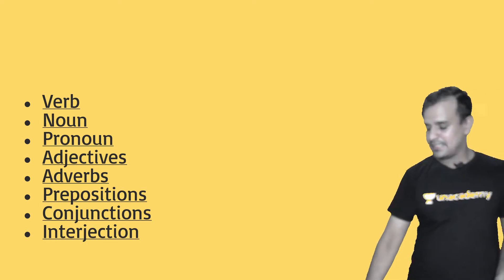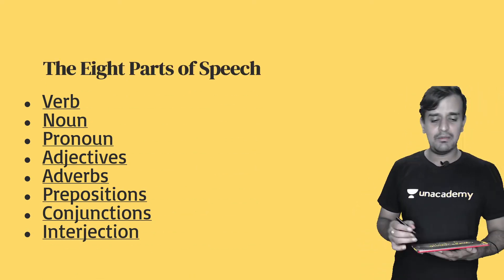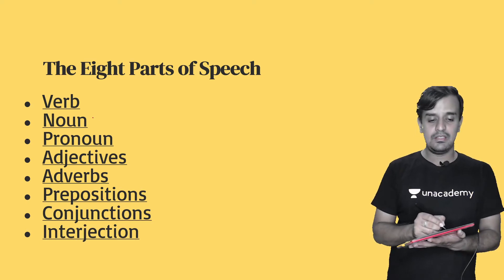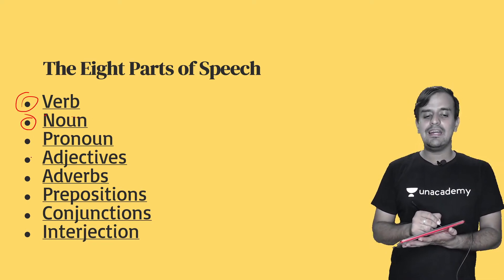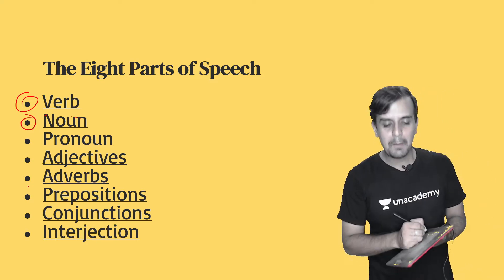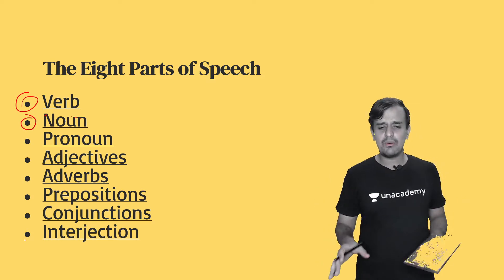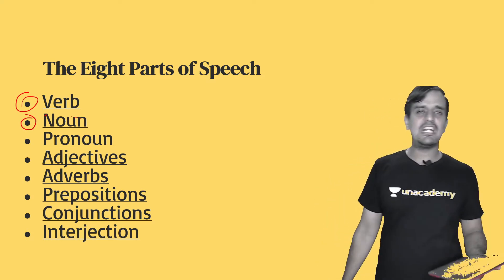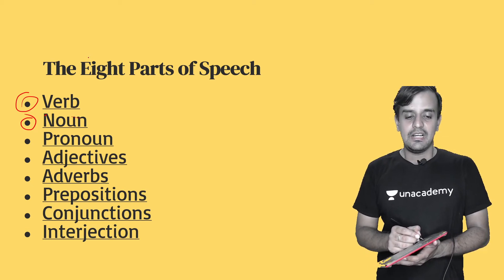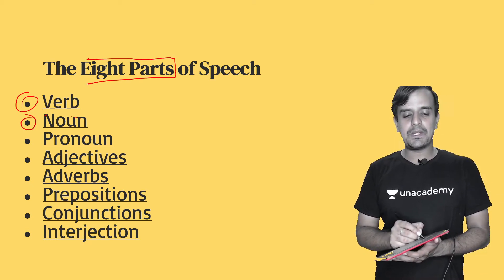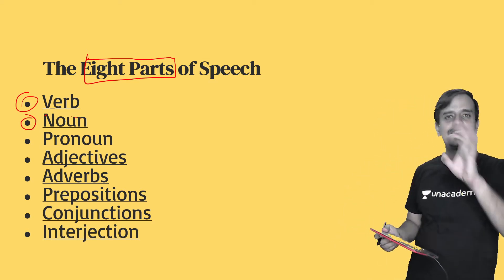So these are our eight parts of speech. What are these? One is verb, another one is noun, then pronoun, adjectives, adverbs, prepositions, conjunctions, and interjections. There are eight parts of speech — you must remember that.